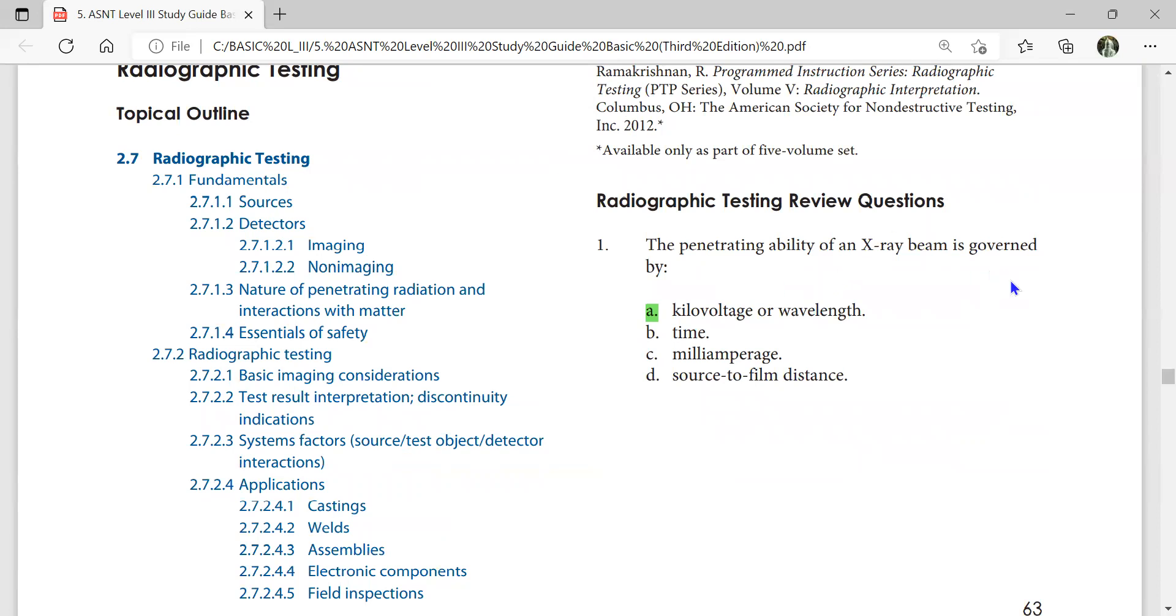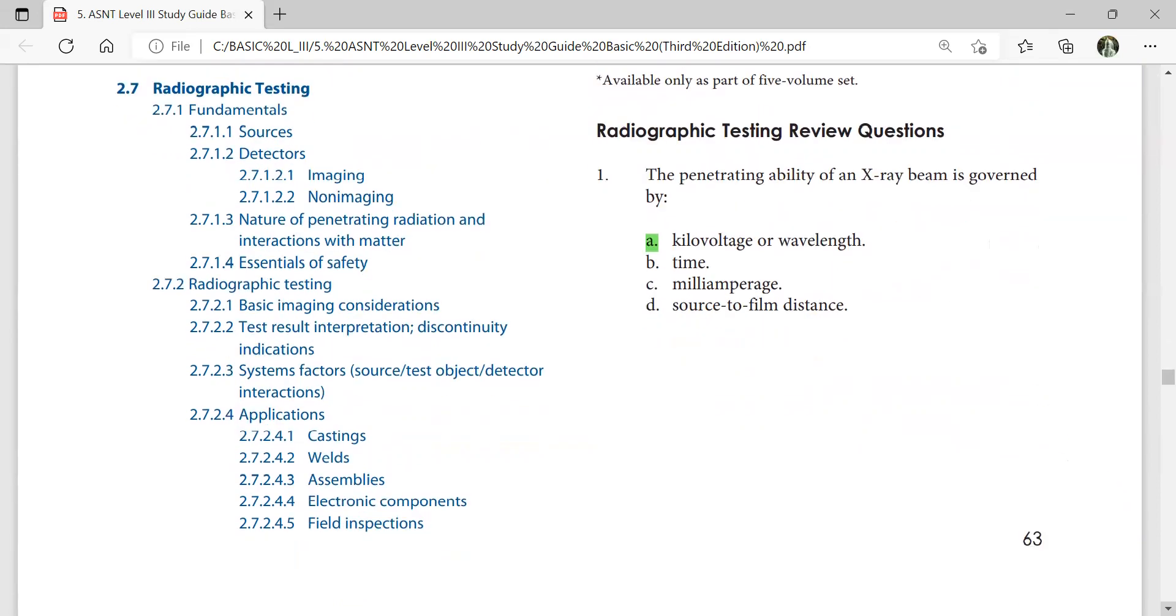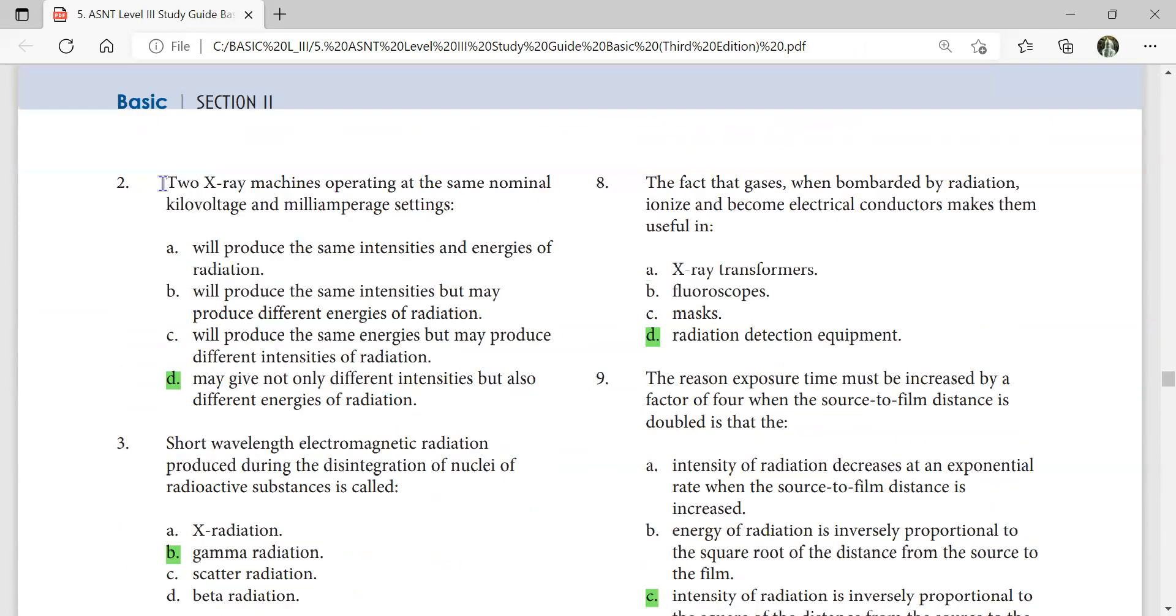Radiographic testing. The penetrating ability of x-ray beam is governed by kilovoltage or wavelength, not amperes. When the wavelength is small, penetrating power is more. So when kilovoltage is more, penetrating ability is more. Two x-ray machines operating at same nominal kilovoltage and milliampere settings may give not only different intensities but also different energies of radiation. The fact that gases when bombarded by radiation ionize and become electrical conductors make them useful in radiation detection equipment.